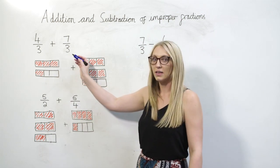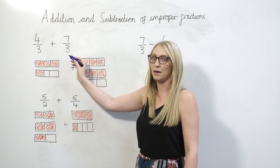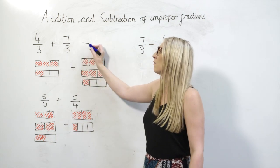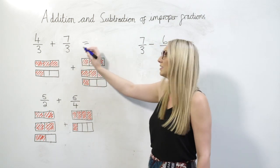Four-thirds add seven-thirds. Now you'll notice that the denominators are the same so we can add them straight away. Four-thirds add seven-thirds is eleven-thirds.